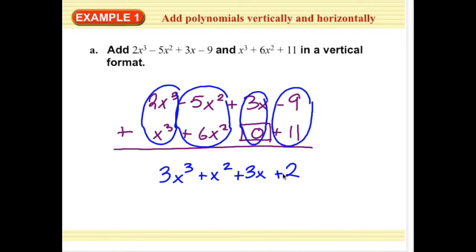and 2x cubed plus x cubed is actually 3x cubed. So 3x cubed plus x squared plus 3x plus 2. So this is my sum, the sum of two polynomial functions that I just went ahead and added together, just like that.